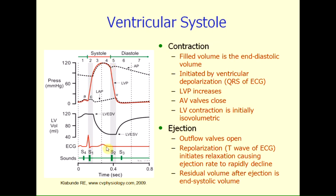About halfway through systole, we see the appearance of the T-wave on the electrocardiogram. The T-wave represents ventricular repolarization and will begin to initiate relaxation. This relaxation continues until the left ventricular pressure falls below the aortic pressure, which causes the aortic valve to suddenly slam shut, stopping ejection. From that point on, there is no further change in left ventricular volume, so the closure of the aortic valve marks the end of ventricular systole. The closure of the aortic valve and the near-simultaneous closure of the pulmonic valve produces the second heart sound, S2.